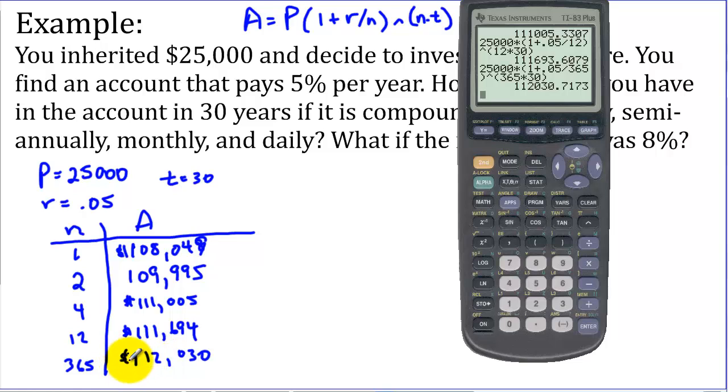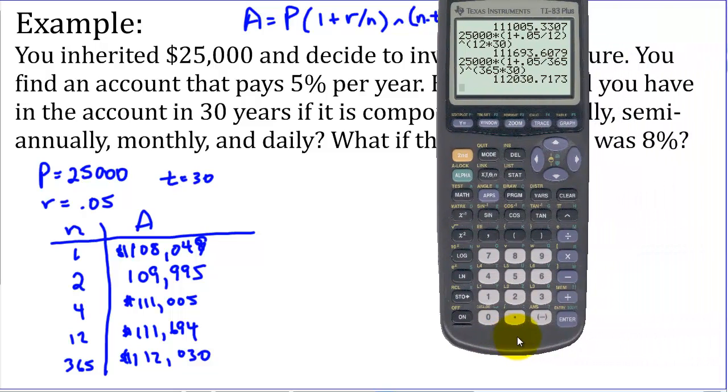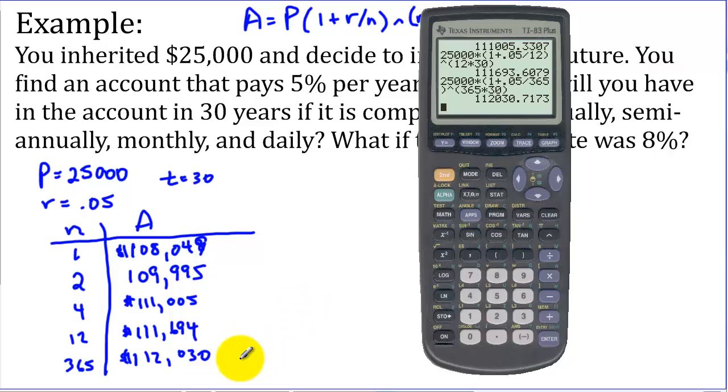So with all things being equal, meaning the same interest rate, the same amount of money, the same time, you're looking to get the most amount of compounding, so the most frequent compounding. Now the last part of this question was, what would happen if the interest rate was 8%? Now I'm not going to go and recalculate all of these, but let's look at down here. Let's look at the daily at 8% to see just an increase going from 5% to 8%. Let's see what that would do.